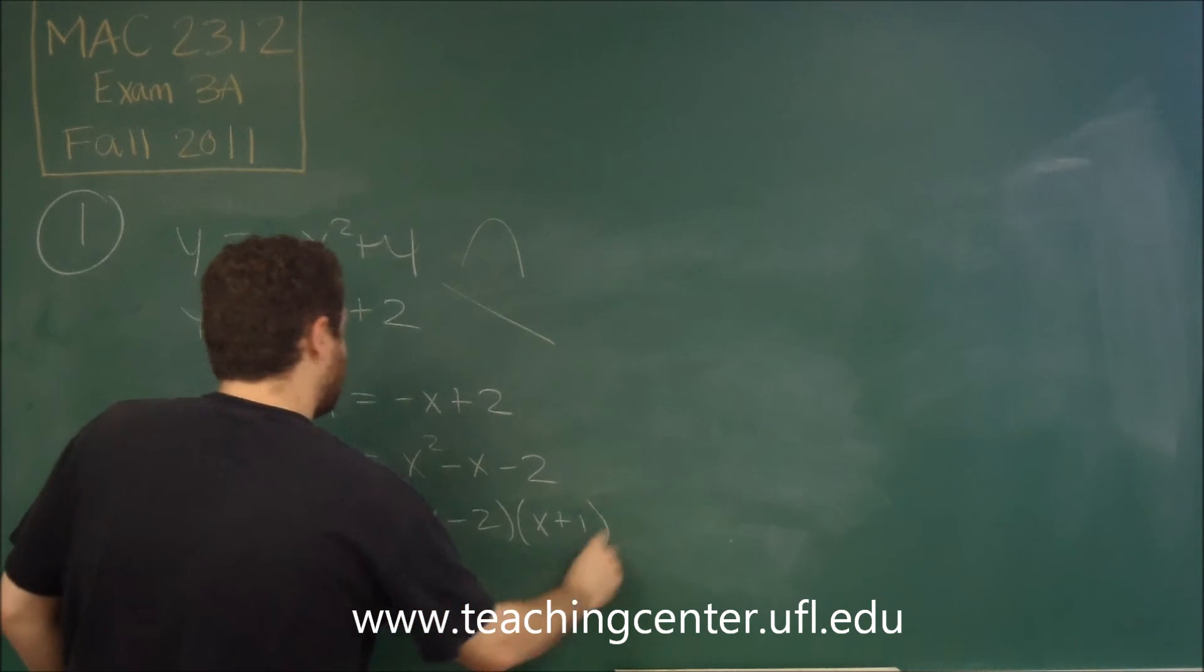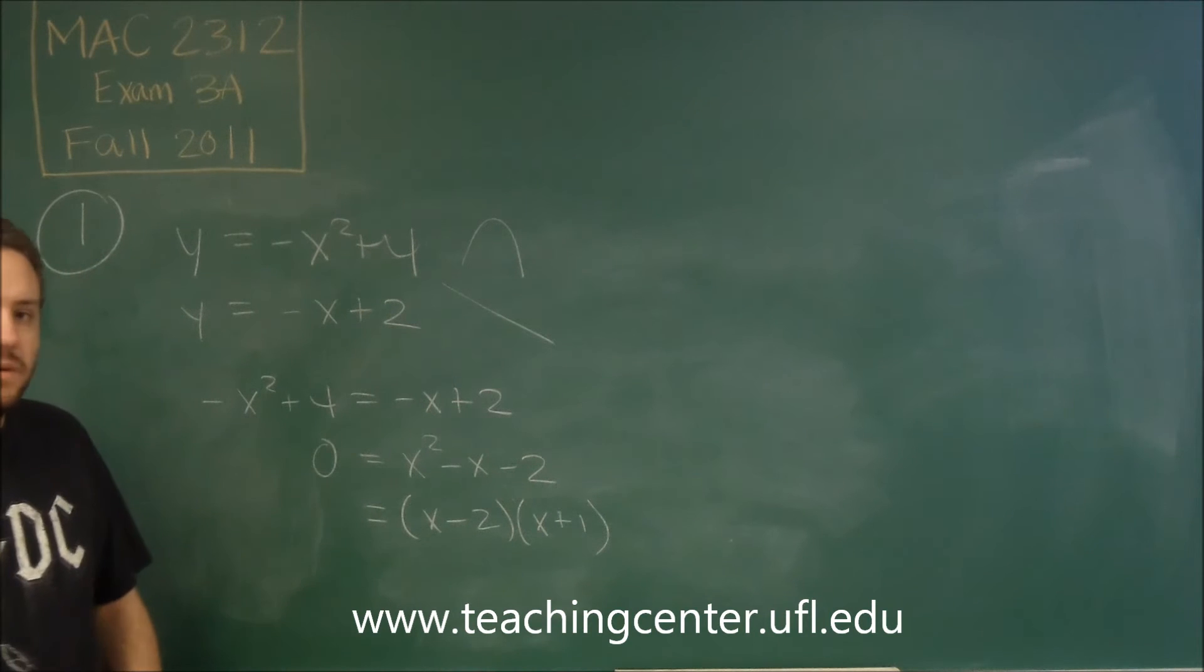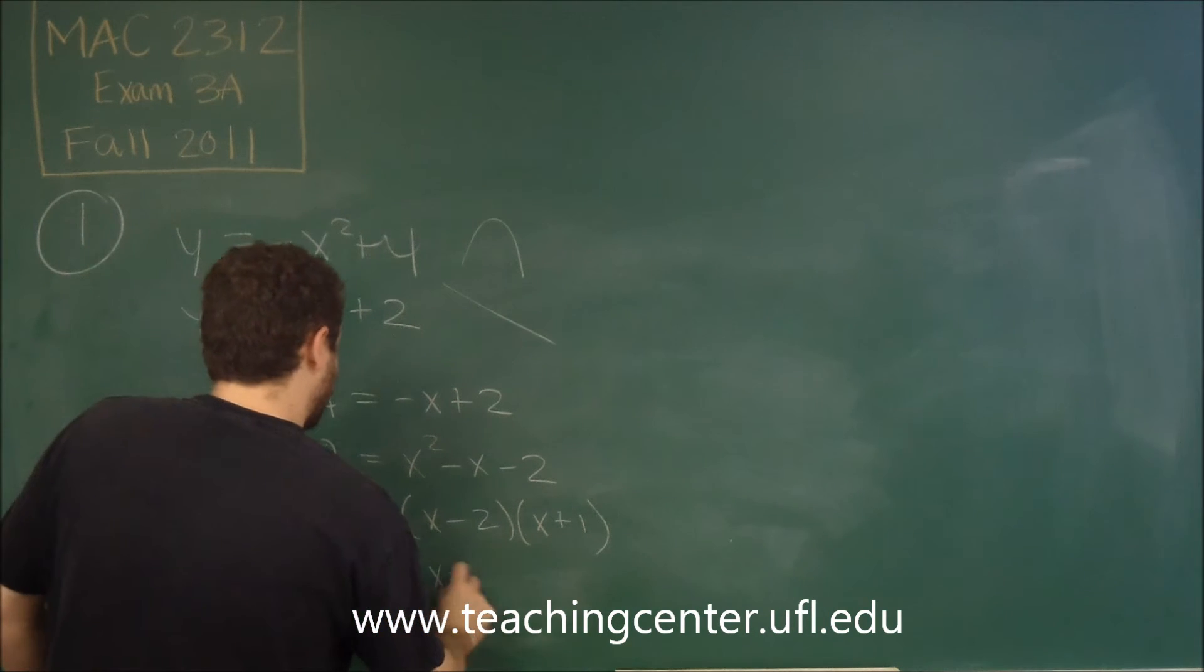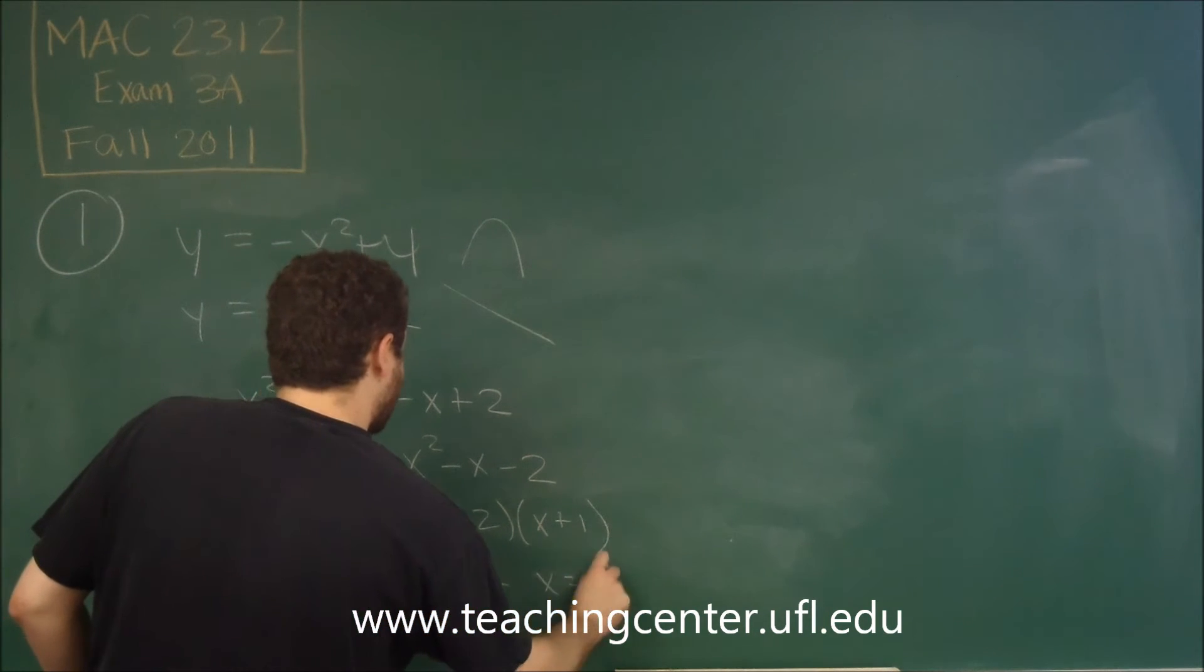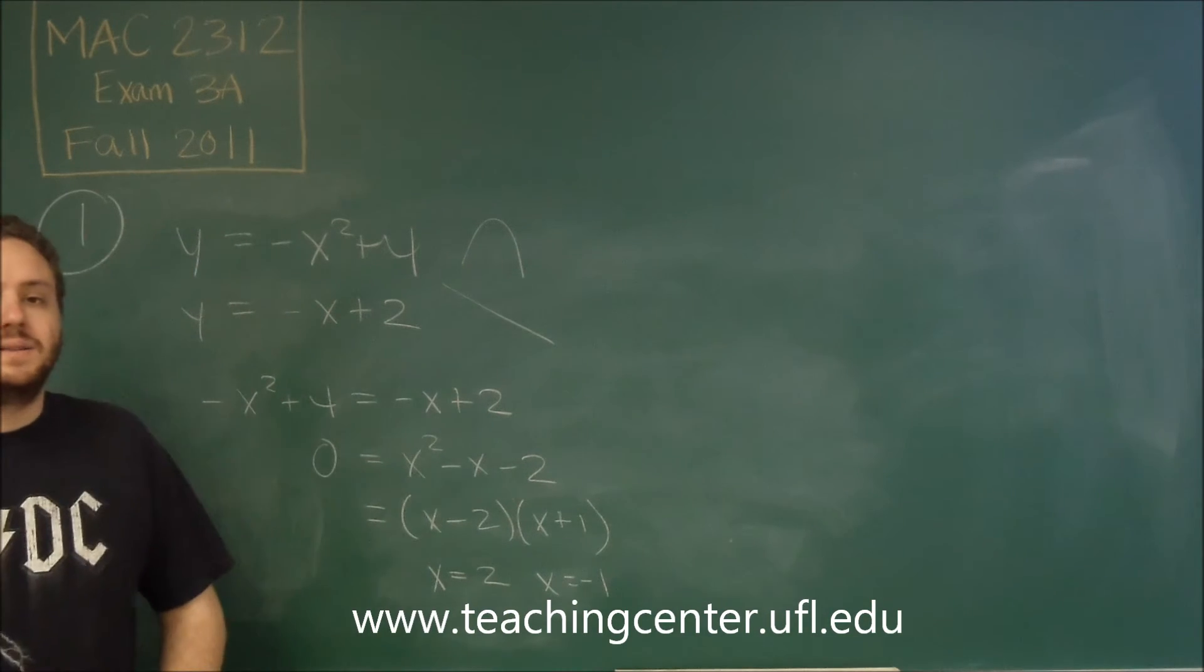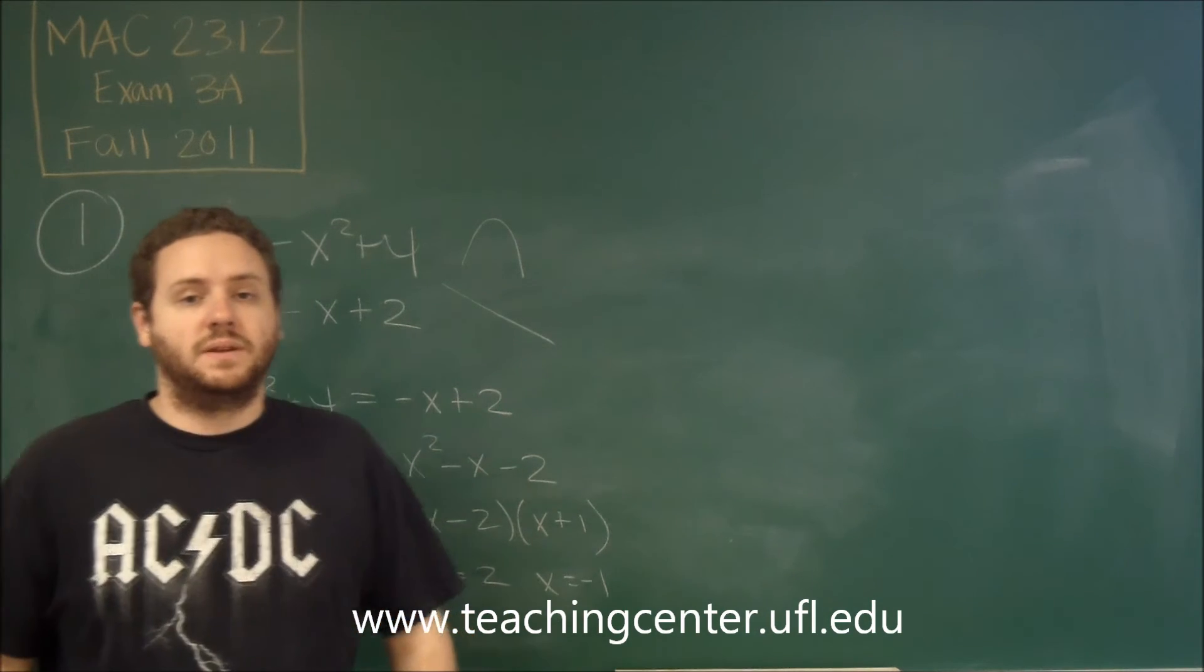That factors nicely into x minus two, x plus one, and you can see then we get x equals two, and x equals negative one as our points of intersection.